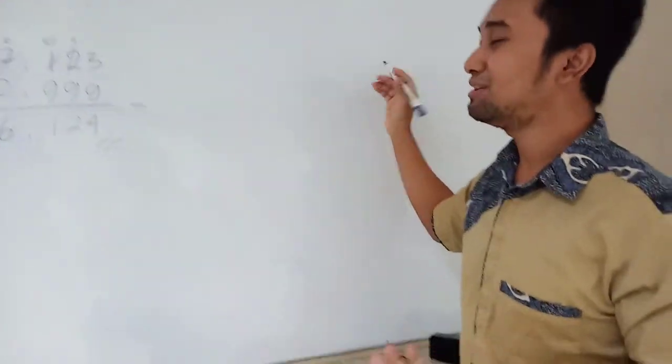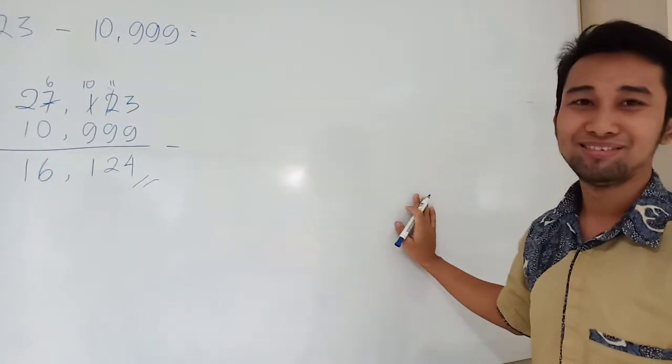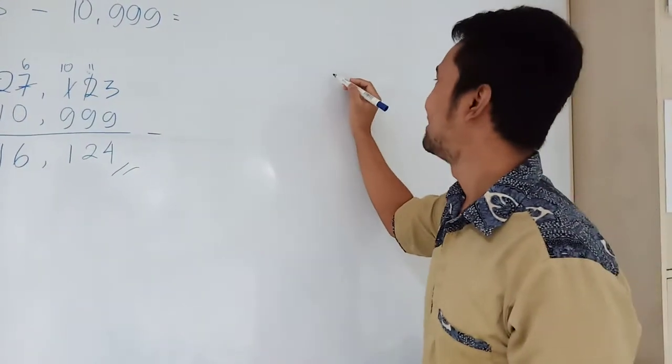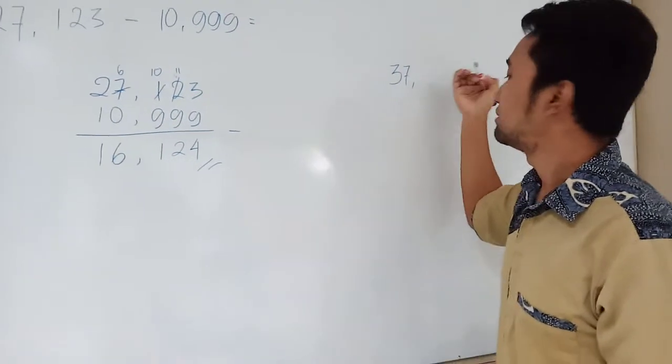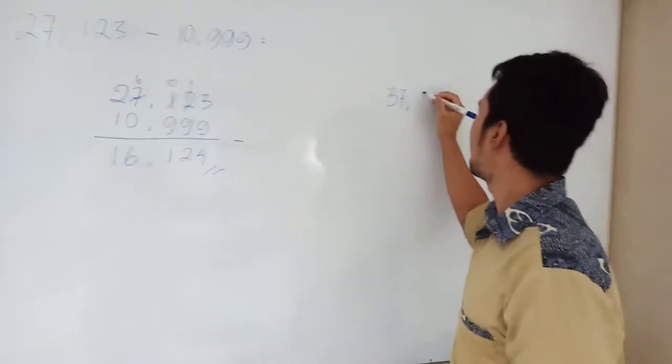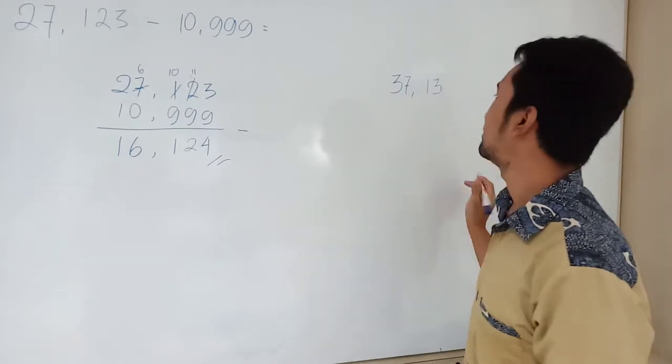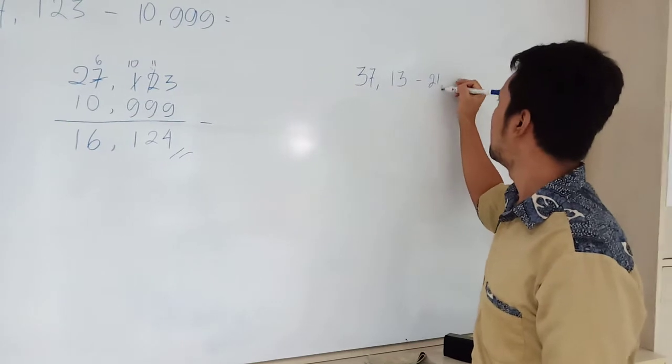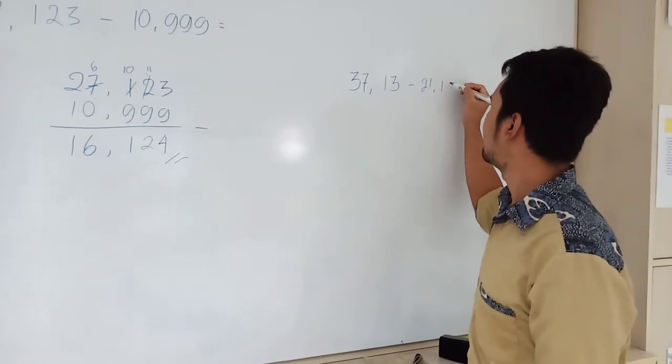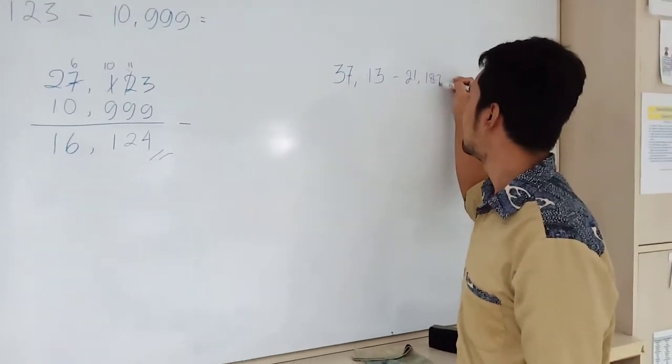The number? Can you give me the number? What? No? Okay. 37.13. And then minus by, for example, 21.187.